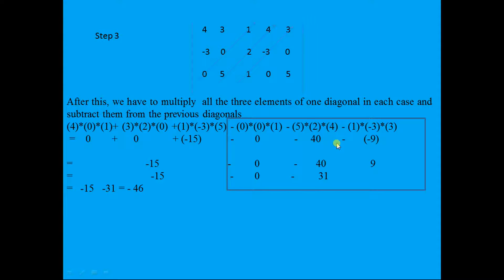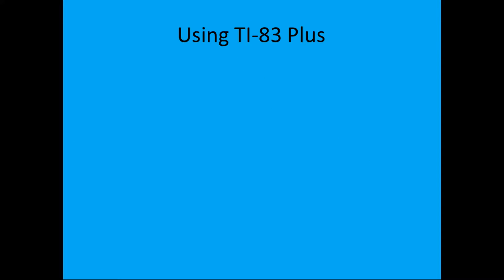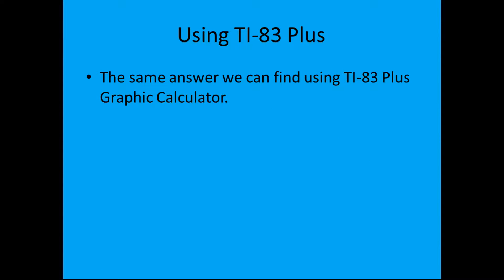So the determinant of this 3 by 3 matrix is −46. The same result can also be calculated using a TI-83, TI-83 Plus, or TI-84 Plus graphing calculator to verify the answer.